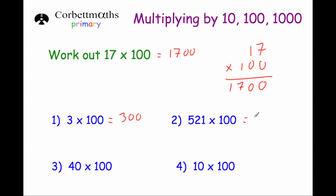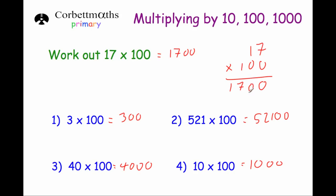521 times 100: add two zeros, giving 52,100. 40 times 100: write the 40 down and add two zeros, giving 4,000. And 10 times 100: write the 10 down and add two zeros, giving 1,000. So to multiply whole numbers by 100, you can think of the digits getting 100 times bigger, moving two columns in your place value — or simply add two zeros on the end to answer quickly and mentally.